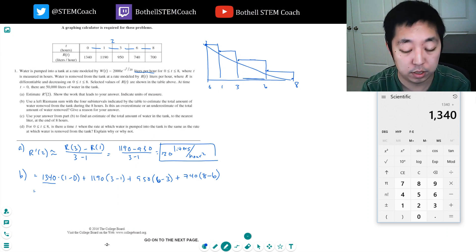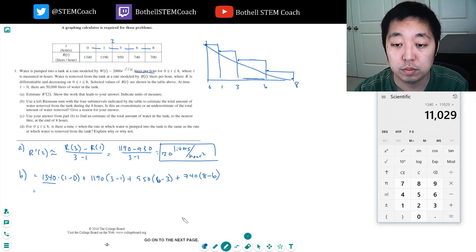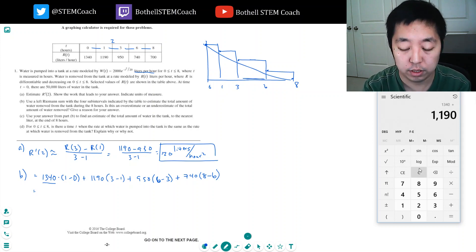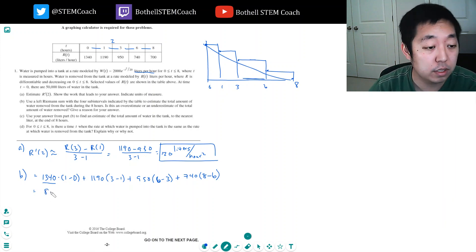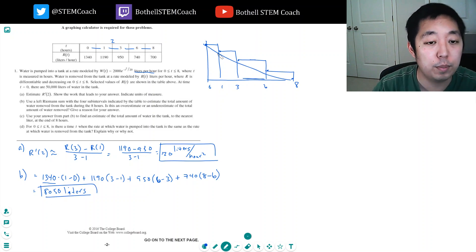I can do this on a simple calculator: 1340 plus 1190 times 2 plus 950 times 3 plus 740 times 2. I get 8050, and the units are liters per hour times hours, so that's liters. Looking at my picture, this is an overestimate. A left-hand sum is always an overestimate when the function is decreasing, because r(t) is decreasing.